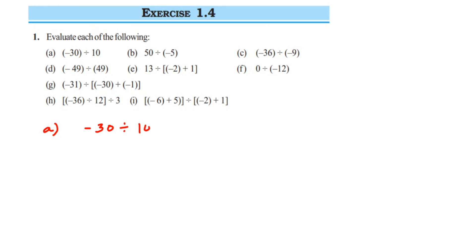I'm going to write this in fractional form: minus 30 divided by 10. Now do normal division by cancellation, like we do for natural numbers or whole numbers, and then worry about the sign. 10 threes are 30, so we get 3. There's only one negative sign, so the answer is minus 3. If there are two negative signs, they cancel to give a positive. With one negative sign, you get a minus sign in the final answer.